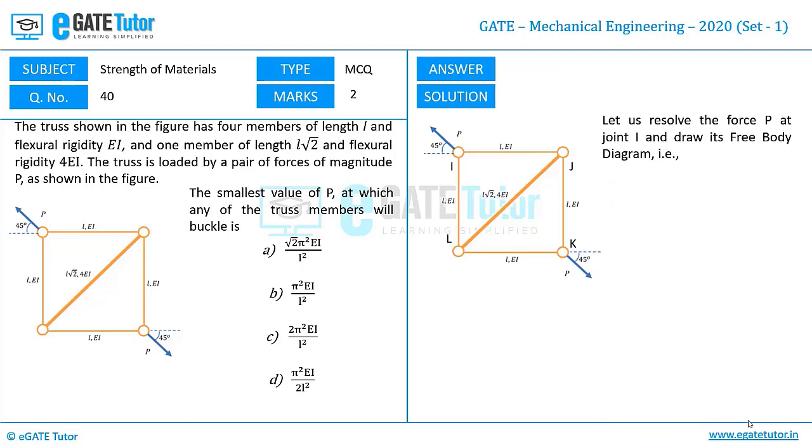Let us try to draw its free body diagram. Free body diagram of joint I is like this where FIJ is the force carried by the member IJ in the truss and FIL is force carried by the member IL in the truss. P is resolved as P cos 45 towards left and P sin 45 towards top.